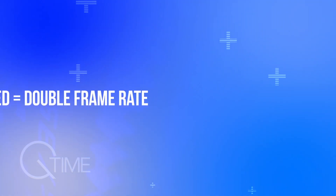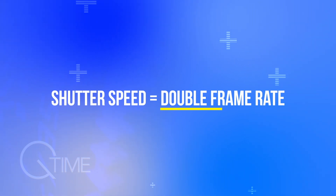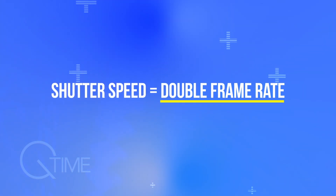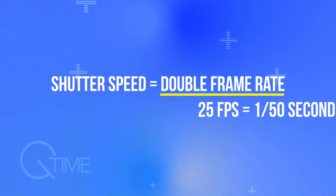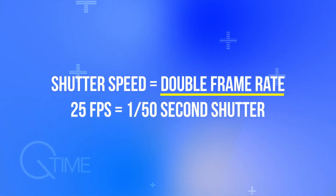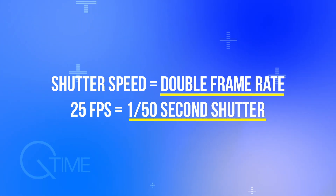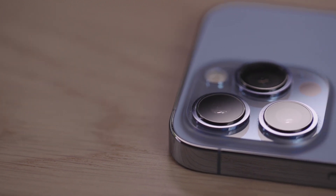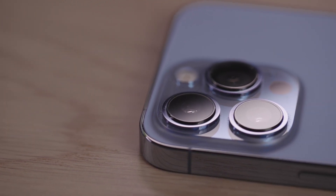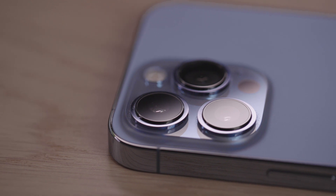In the film world the general rule is your shutter speed should be set to double the frame rate. Right now because I'm shooting at 25 frames per second, my shutter is 1/50th of a second. But here's where we have a problem, especially on a smartphone.